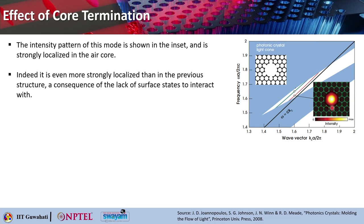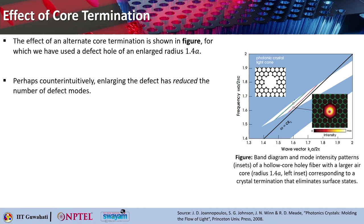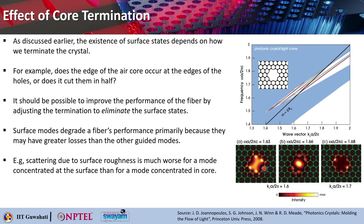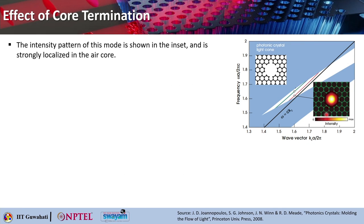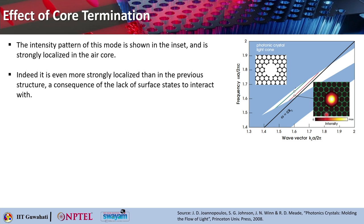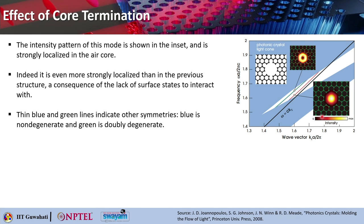Indeed, you can see that it is even more strongly localized than the previous structure. If you compare with the previous structure — as compared to those two doubly degenerate modes — now you can see that the localization is even actually better. This is because of the lack of surface states to interact with. The thin blue line here basically indicates the other symmetry. The blue shows non-degenerate and the green one shows doubly degenerate.